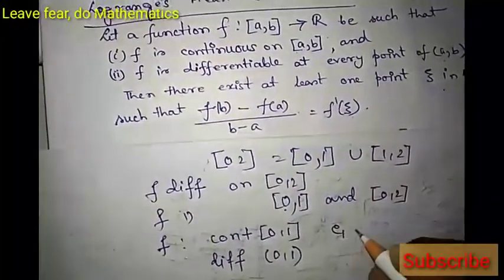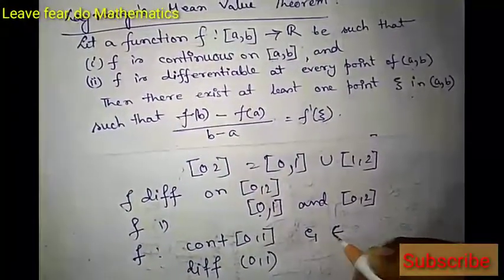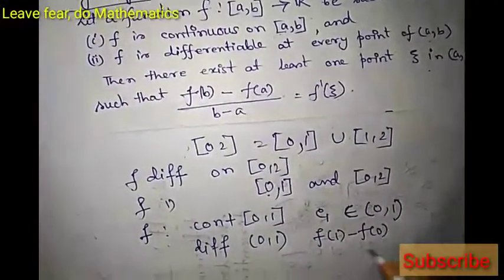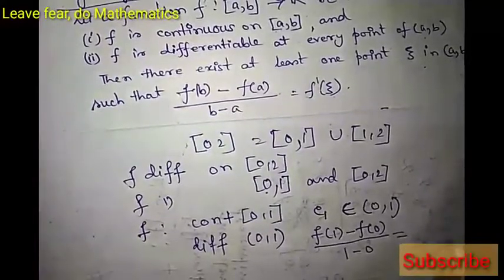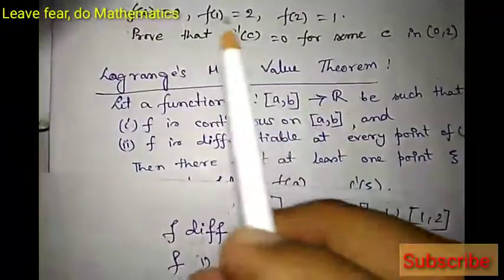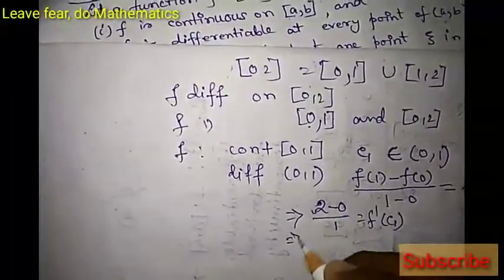Hence, there exists a point c1 in open interval (0,1) such that [f(1)-f(0)]/(1-0) = f'(c1). Now f(1)=2 and f(0)=0, so this gives (2-0)/1 = f'(c1). Therefore f'(c1) = 2, which is greater than 0. So we have f'(c1) > 0.